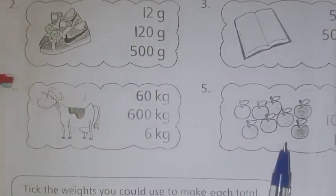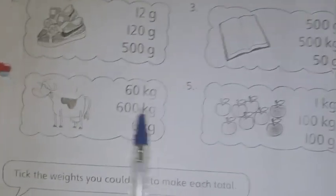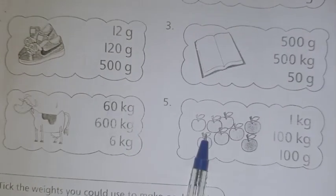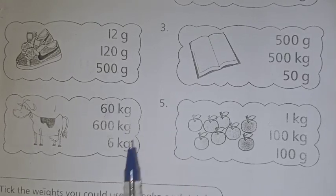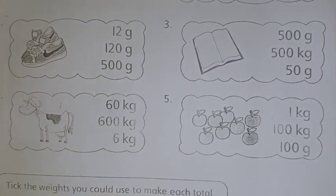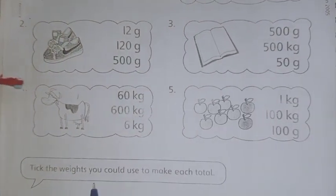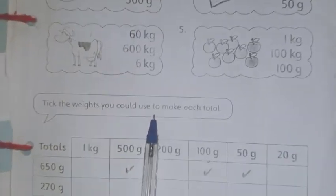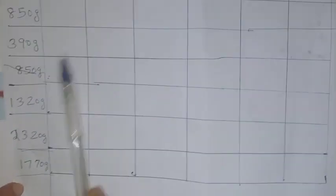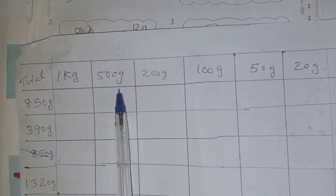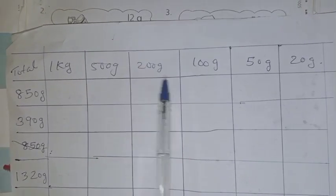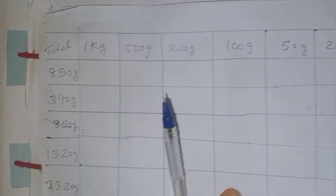Then we have a cow and we have some apples also here. You guess the weight of these two objects and you circle. Then we have another activity. Tick the weights you could use to make each total. Children, some totals are given here. You have to tick the correct weights for making this total. So we can go through some examples.